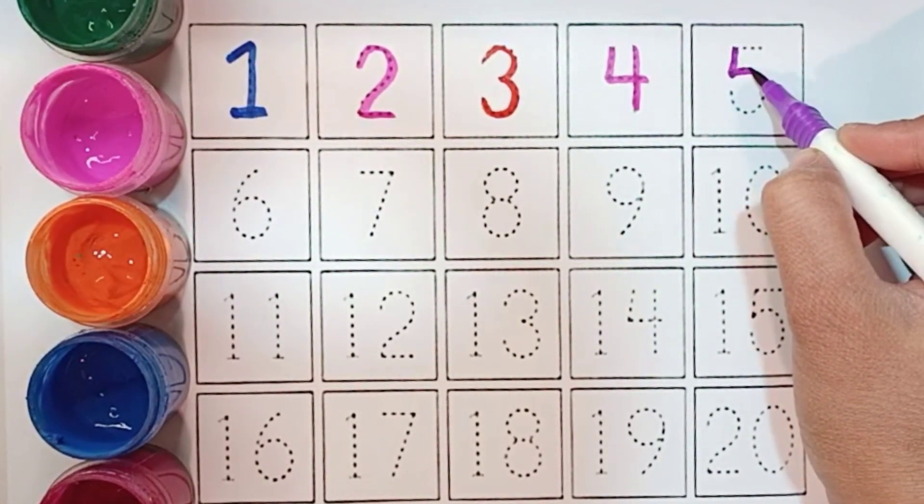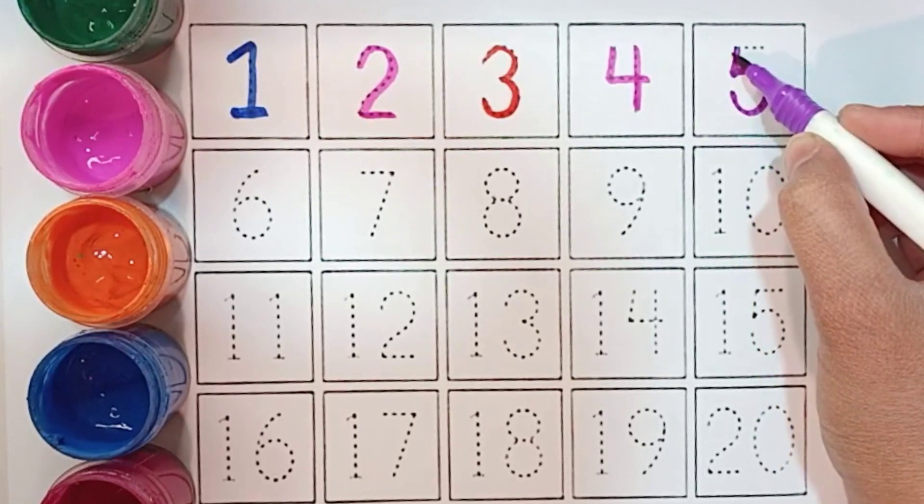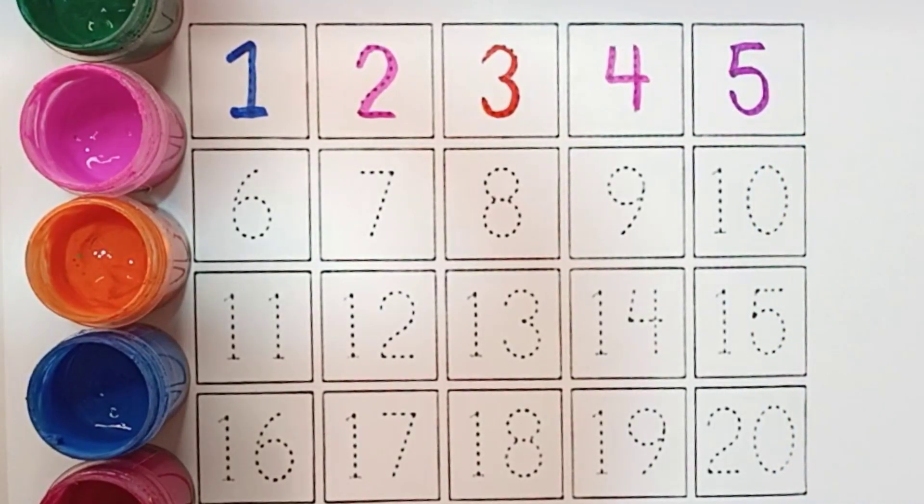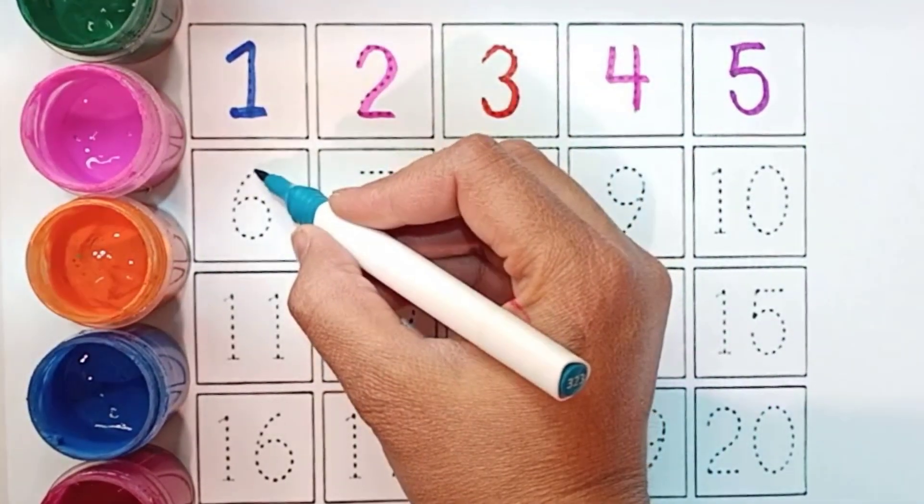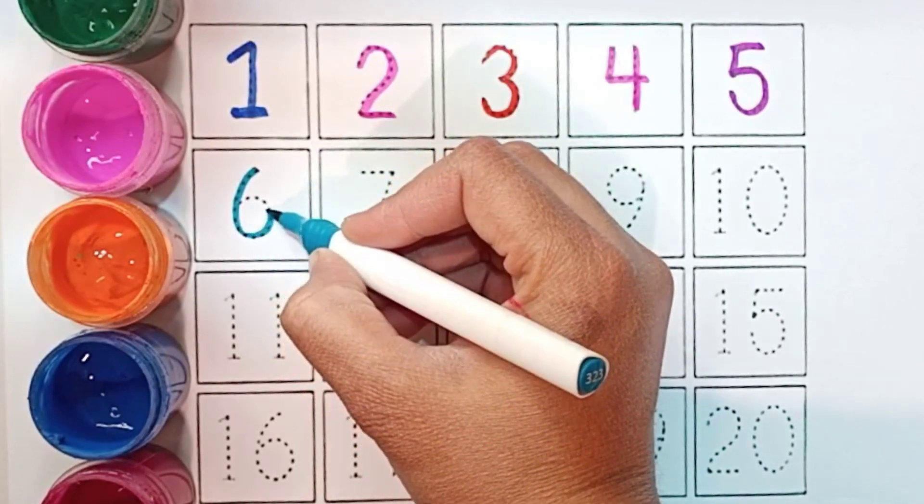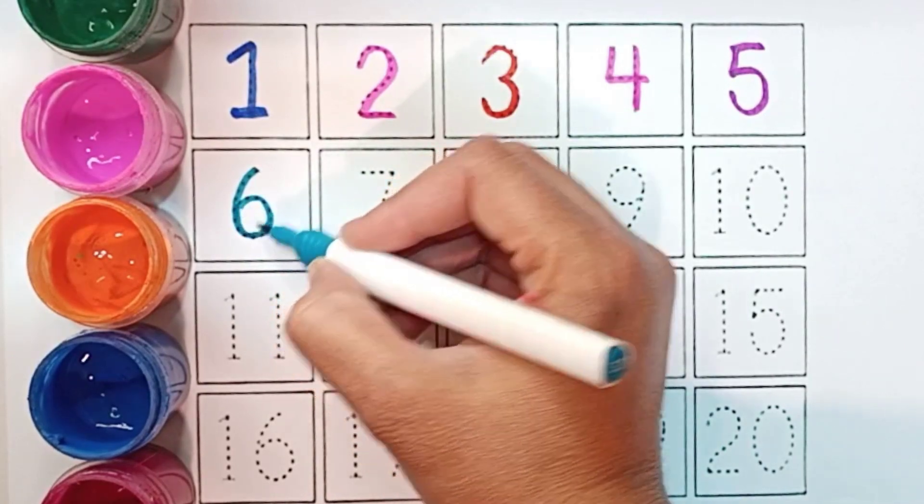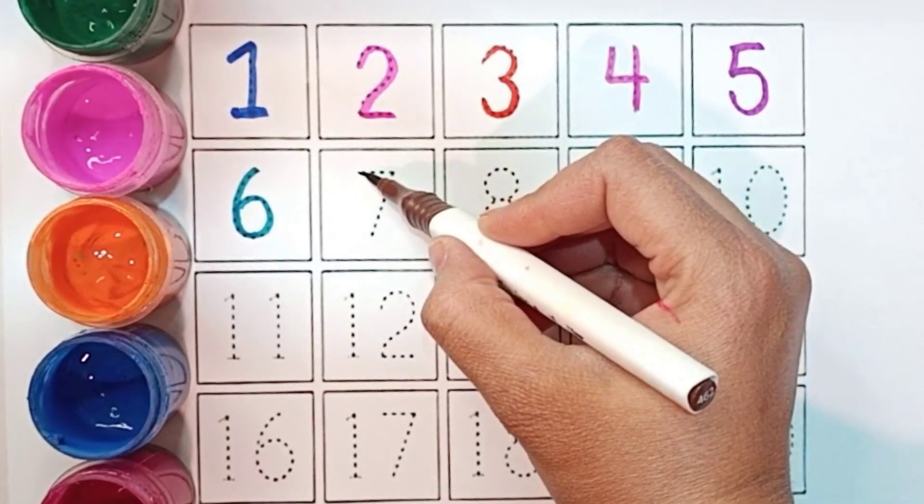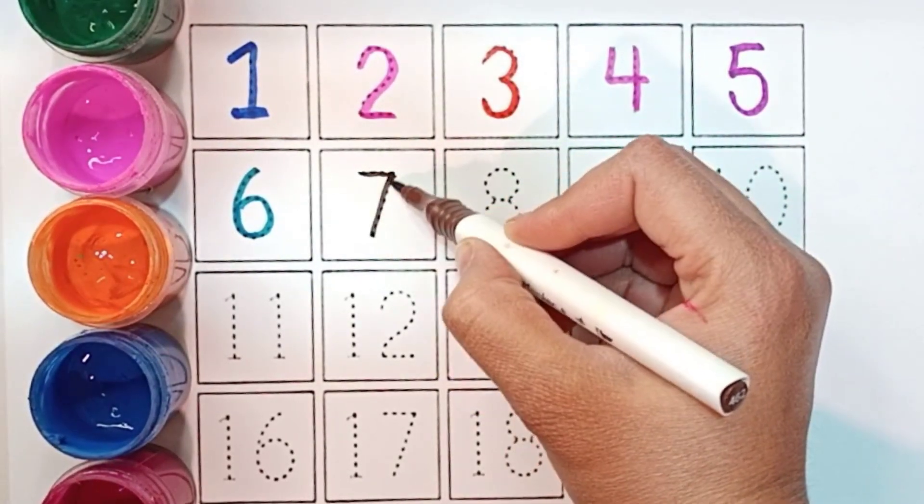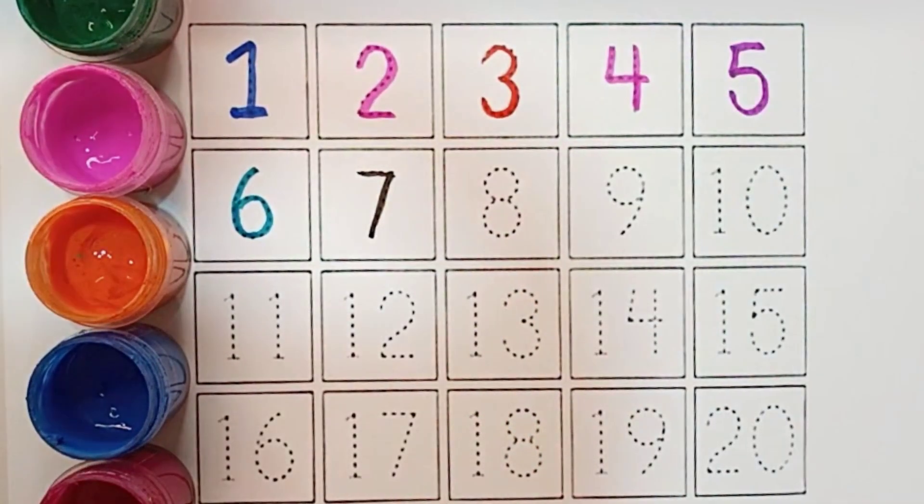Number 5. Ye hai number 5. 5 ke baad aata hai number 6. 6. Number 7. Ye hai number 7.